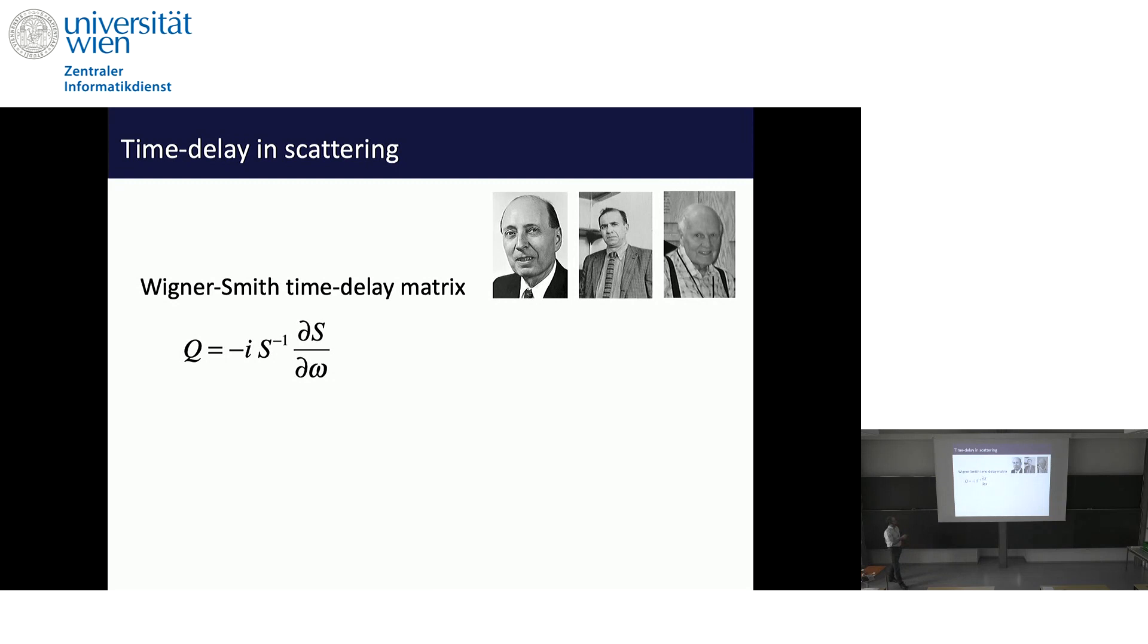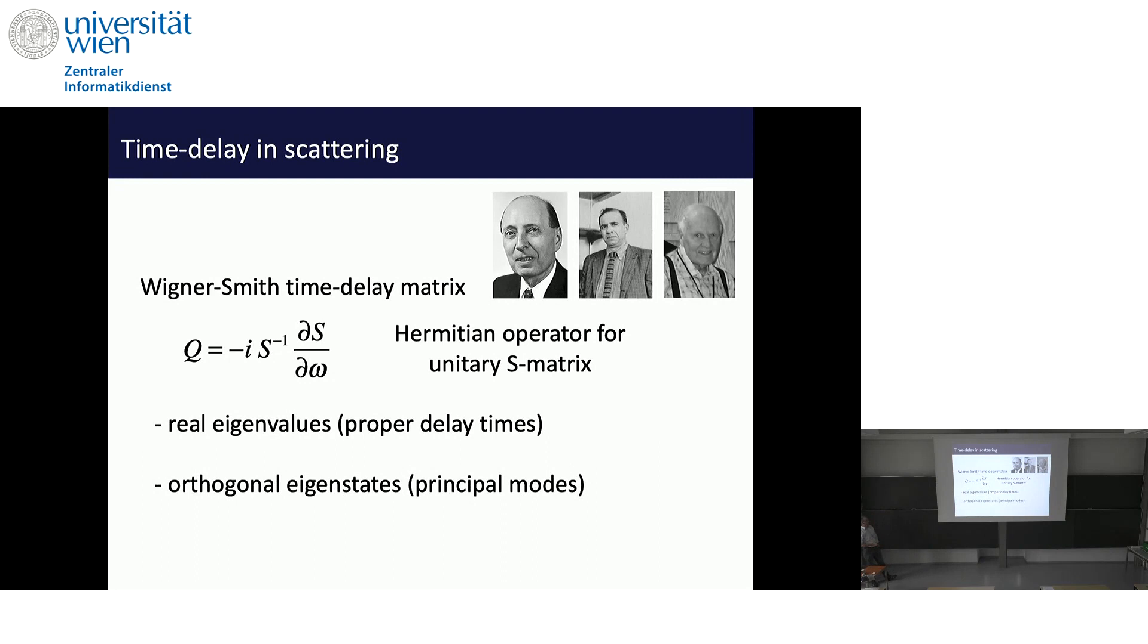It's the so-called Wigner-Smith, or Eisenbud-Wigner-Smith time delay operator. It's a matrix built up of the scattering matrix. The scattering matrix is just a matrix that connects all incoming states to all outgoing states. It can be measured. Once you have it, and you take its frequency derivative, you get access to the conjugate quantity to the frequency, which is the time. This operator has very nice properties. If the scattering matrix is unitary, it's Hermitian. So it has real eigenvalues, the so-called proper delay times. It has orthogonal eigenstates, the so-called principal modes.